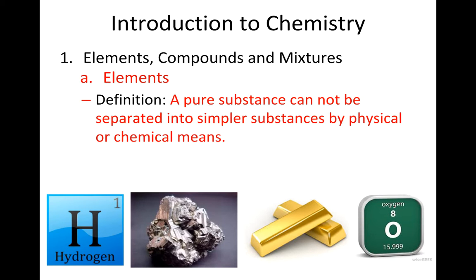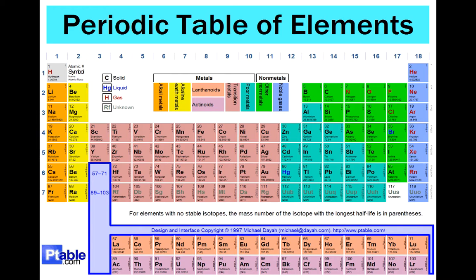For example, hydrogen, iron, gold, oxygen—all of these are elements. Like I said, any one of these on the periodic table are elements.